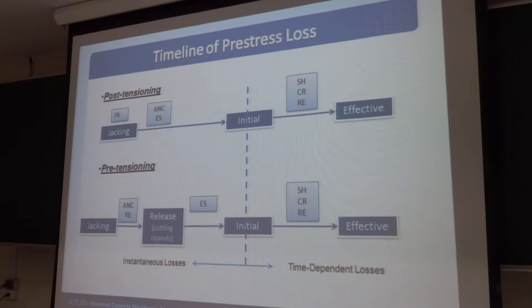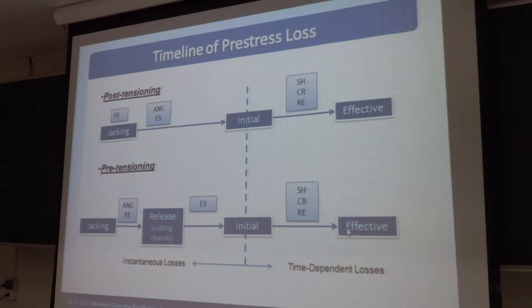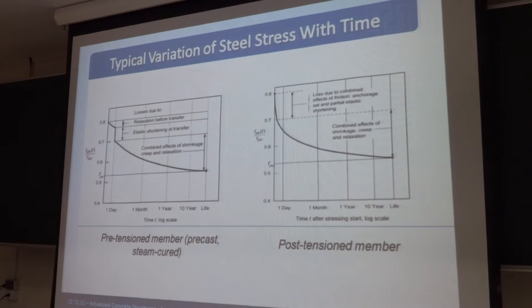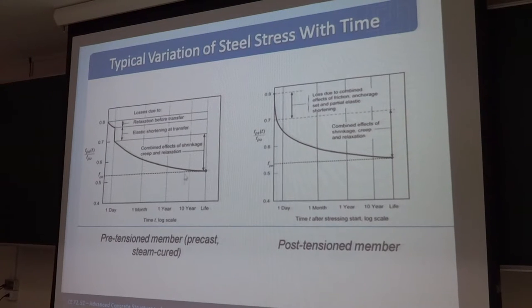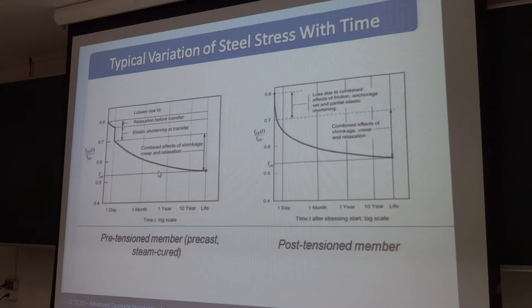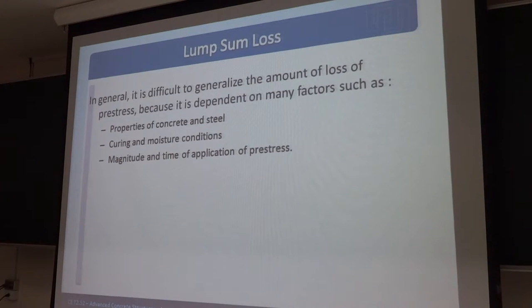After cutting the strand, there will be elastic shortening and then losses. Time-dependent losses like shrinkage, creep, and relaxation are the same in both cases. In pre-tensioning, there are no losses due to friction. This is the variation of steel stress with time — after 10 years, you can see it is reducing from 70% to about 55%.